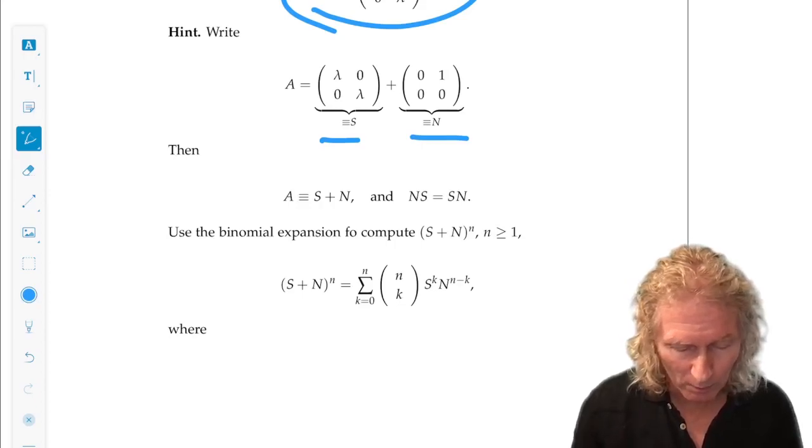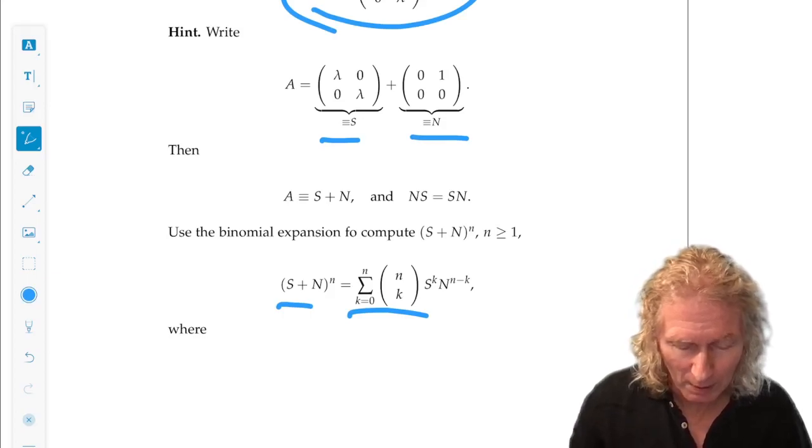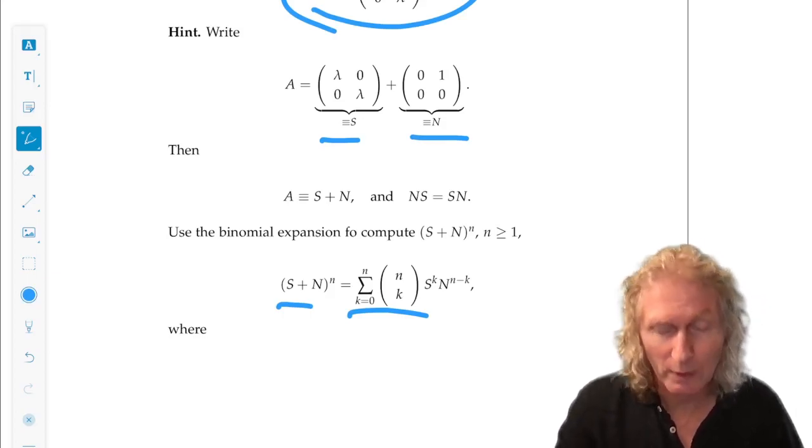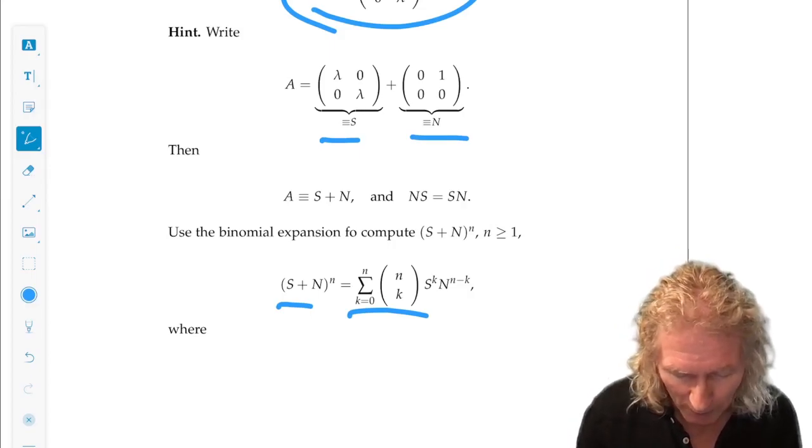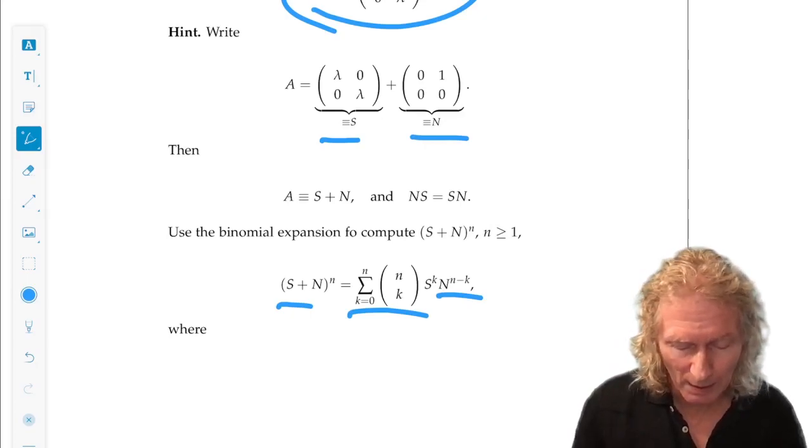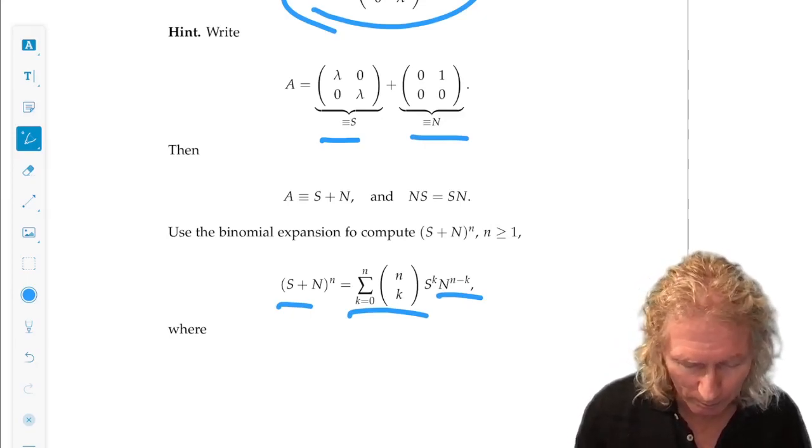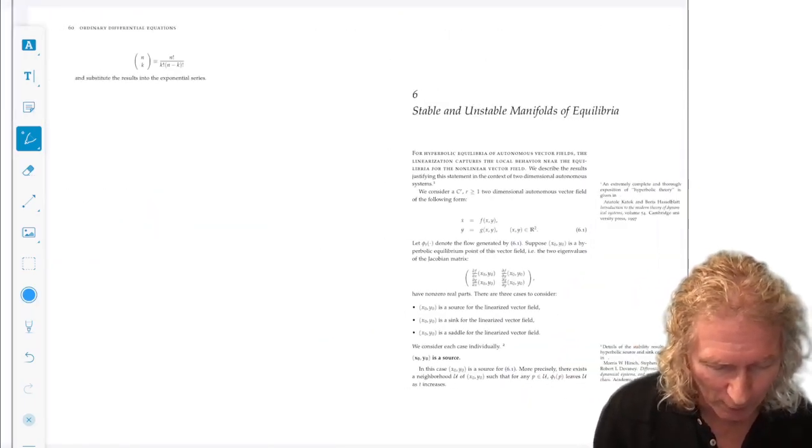So then you compute the expansion and then you can compute the exponential series from this result. And you can see here is why N vanishing up to a certain point is important. And this symbol here is the usual, I define it on the final bit, binomial coefficient.